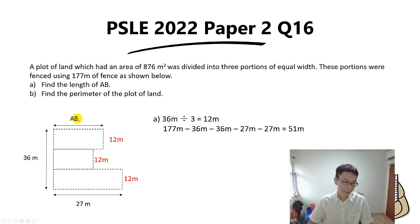So now to find AB, you simply take 51 divided by 2, and that's the answer for part A, which is 25.5 meters.